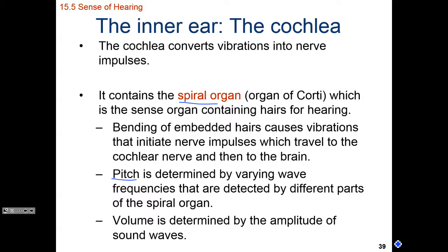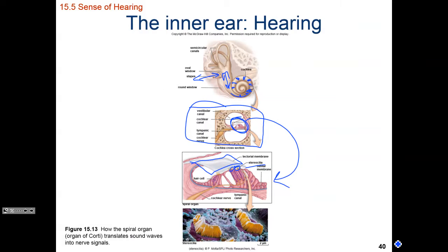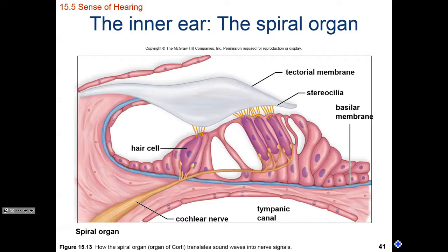Zooming in on the spiral organ, we can see the tectorial membrane, which as it moves pulls stereocilia from three different sensory cells and also from our hair cells. These four different sensory receptors within the spiral organ aid us not only with differentiating pitch and volume, but also with triangulating the location of a noise.